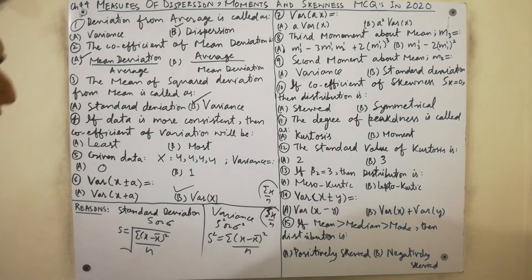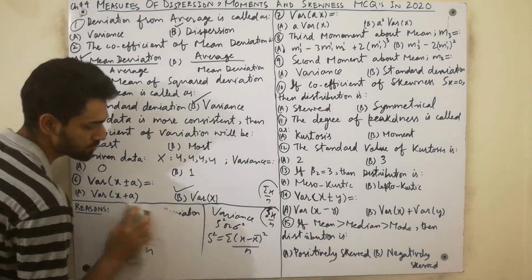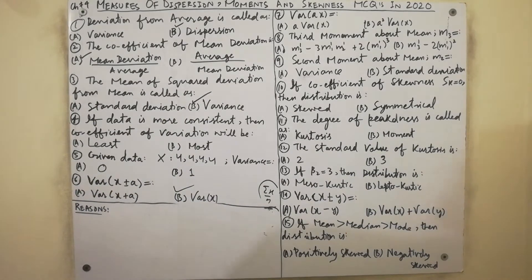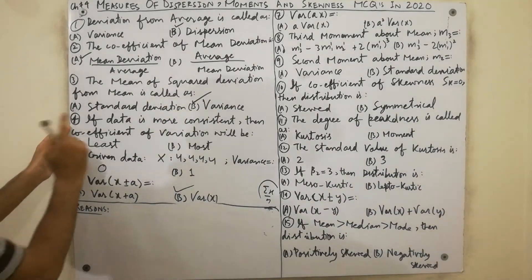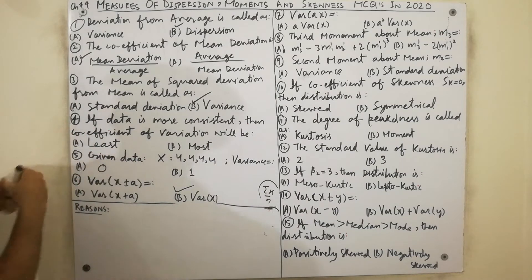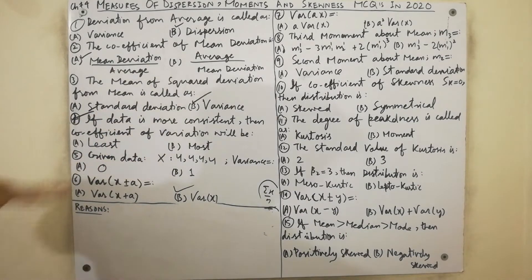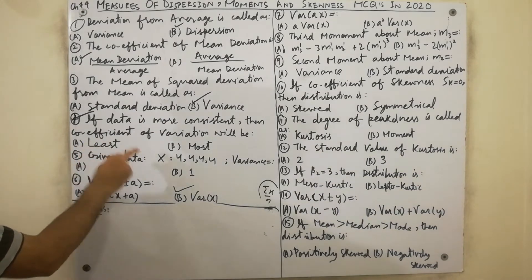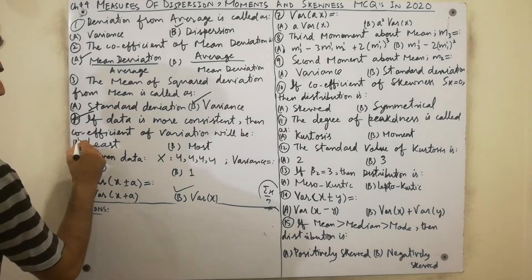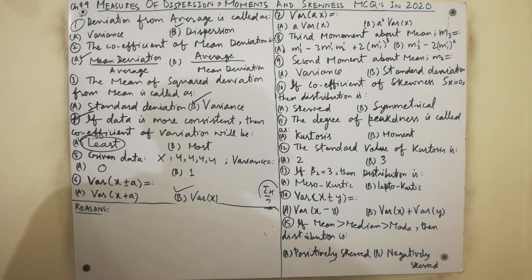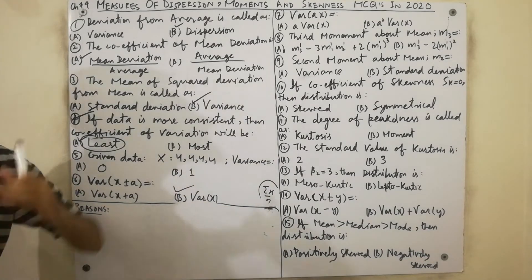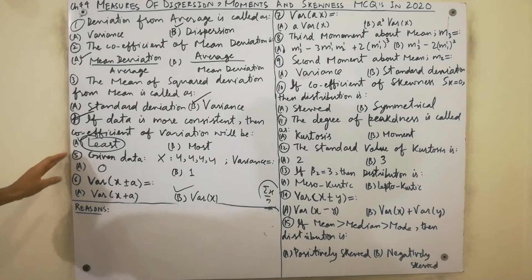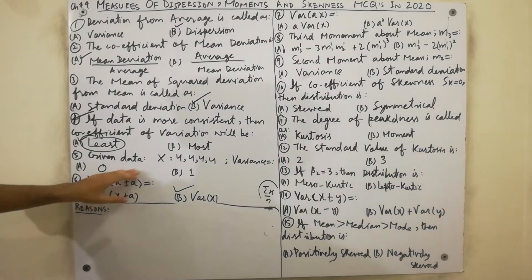Moving to the next MCQ, number four, which is very important: if data is more consistent, then the coefficient of variation will be least. Must remember — if data is more consistent, then the coefficient of variation will be least.